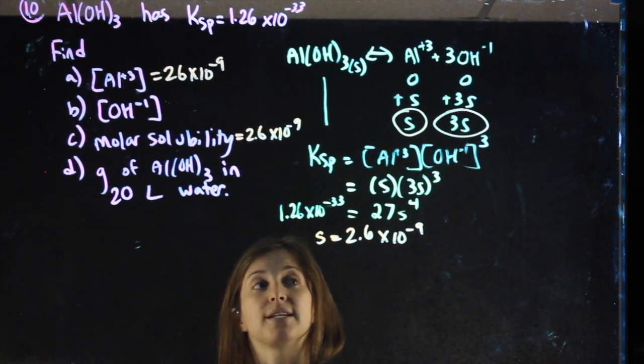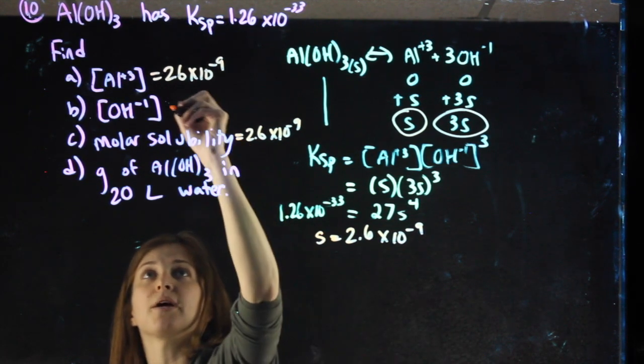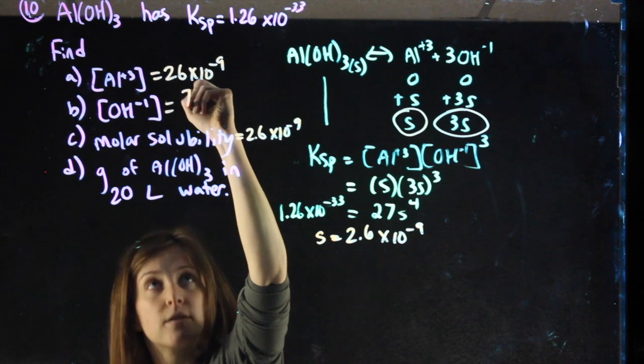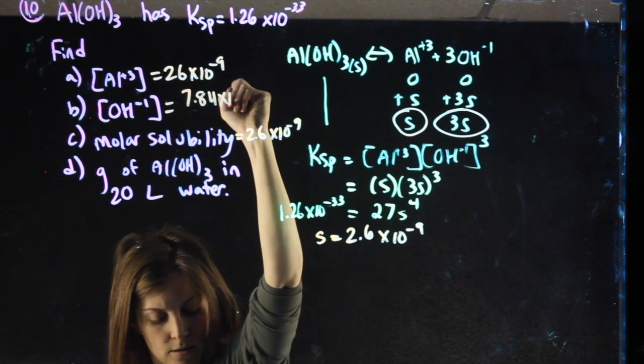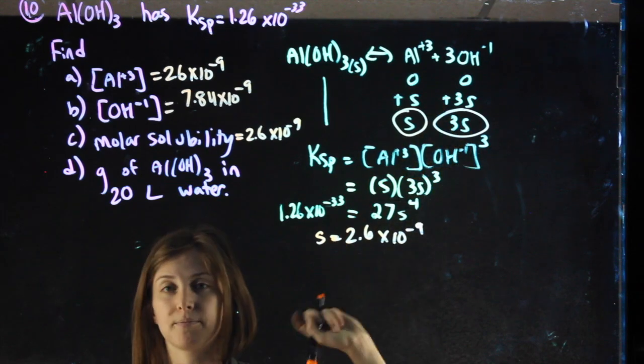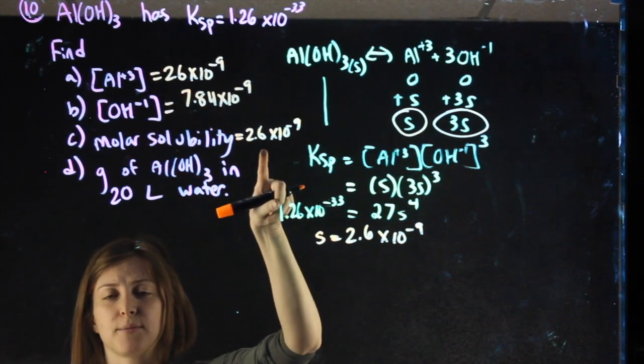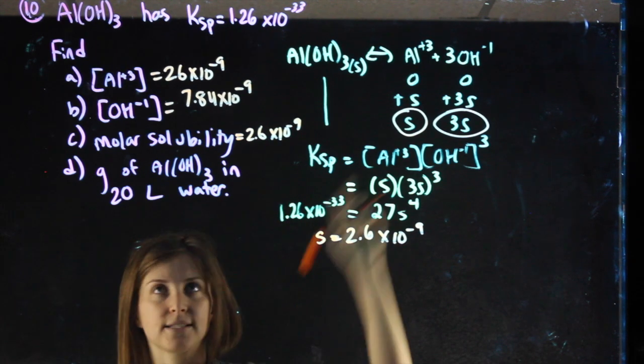Hydroxide, it says, should be 3 times S, so I'm going to take this value I have and multiply it by 3. So that was taking this times 3. Not necessarily the aluminum value, it just so happened it was the same as the molar solubility. It's taken by S times 3.